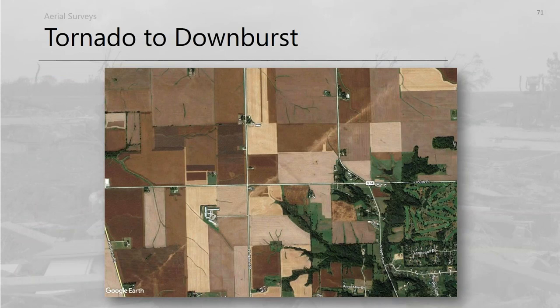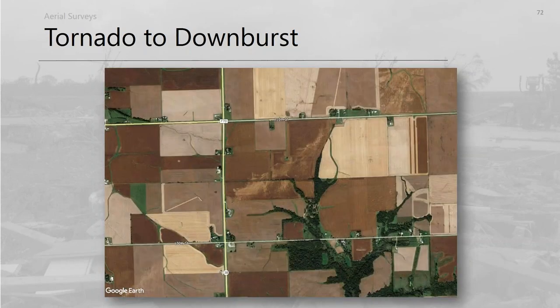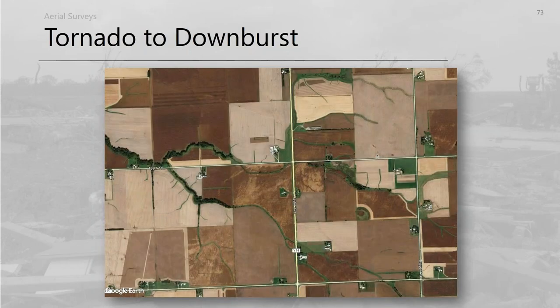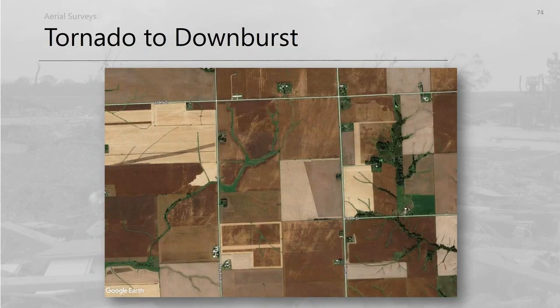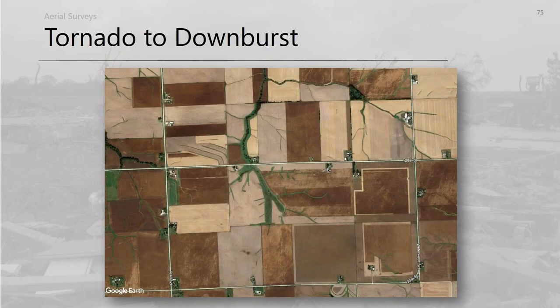Tornadoes can transition to downbursts. An eastern Iowa example shows a clean QLCS tornado path that progresses north, with downburst winds developing on the right flank and the circulation becoming more disrupted. Moving further northeast, the pattern gets much messier with broad cyclonic wind streaks but increasing linearity. Eventually the tornado is falling apart or no longer exists, transitioning to almost entirely linear wind — all over the course of about five to six miles.